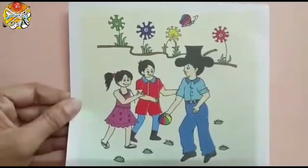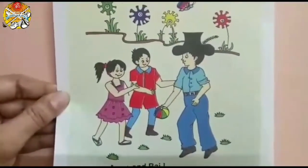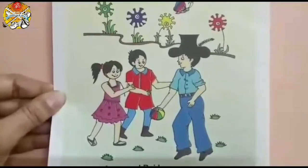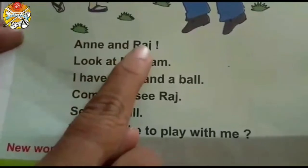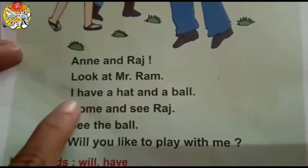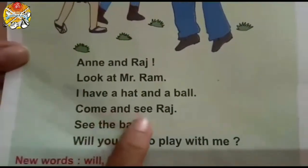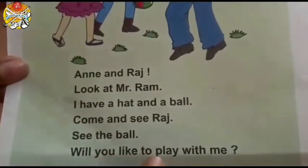Now we have already revised the sight words of the reader book. And you have already learned to read. So now let's start reading our sentences. The first sentence: Annie and Raj. Next one: Look at Mr. Ram. The next sentence: I have a hat and a ball. Come and see, Raj. See the ball. The last one: Will you like to play with me?